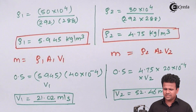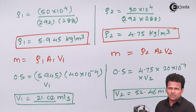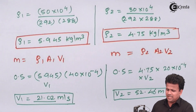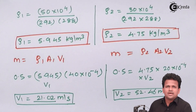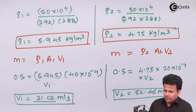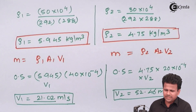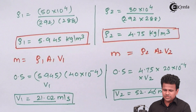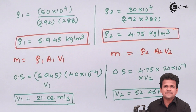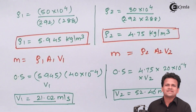We have calculated the values of v1 and v2. We didn't need to apply Bernoulli's equation — this was solved using just the continuity equation. I hope you have understood how we used the isothermal condition equations to solve the problem and calculate the velocity at the inlet and the outlet. Thank you.